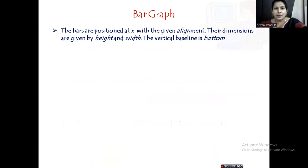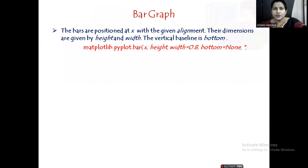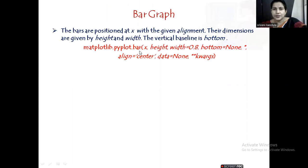First, let us see what a bar graph is. A bar graph is positioned at x with the given alignments, and their dimensions are given by the height and width of the bar. The vertical baseline is always the bottom one. If you see the syntax of it: